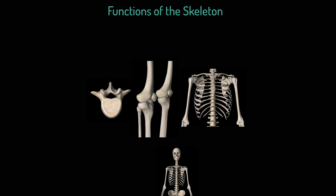Let's talk about the functions of the skeleton, and the first word is support. The skeleton supports vital organs — for example, within the thoracic or chest cavity there is a lot of soft tissue. The ribs and sternum provide a supporting framework. It is the part of us that is solid and robust; it has tensile strength and can flex slightly, but basically it provides this support and framework for our vital organs.